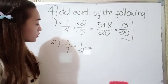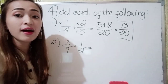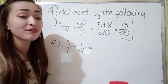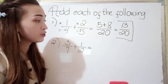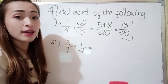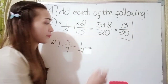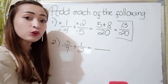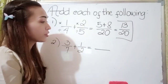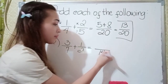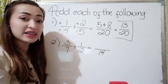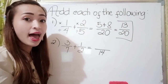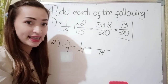For number two, we have three over seven plus one-half. Again, we need to get the least common denominator. The least common denominator of seven and two is 14, because seven can divide 14 and two can divide 14.